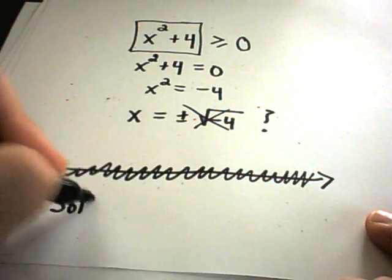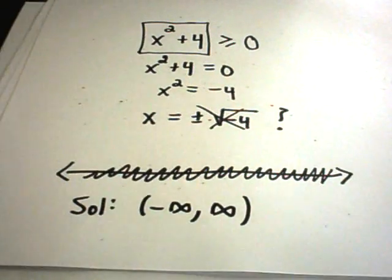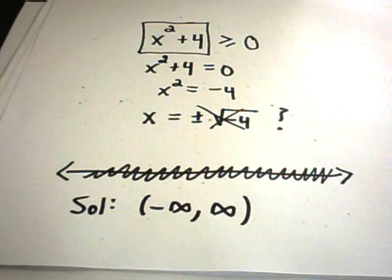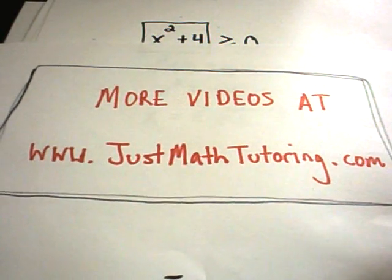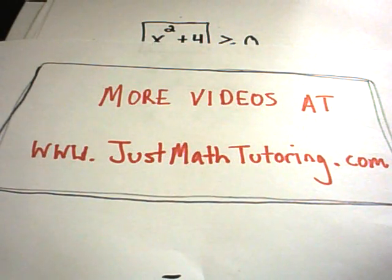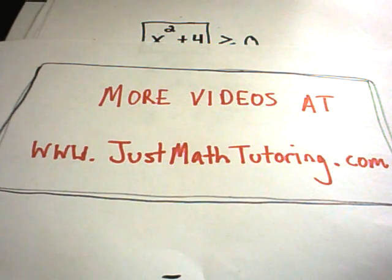Since every number works, the solution set in interval notation is (-∞, +∞). If you need extra practice on solving quadratic equations — factoring, completing the square, and the quadratic formula — there are more examples on my website and plenty on the web as well. The basic procedure for solving quadratic inequalities is: test the solutions to the equation, then take a number from each interval and test it. Hope this helps!